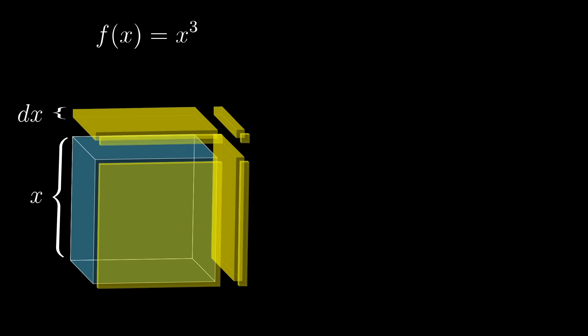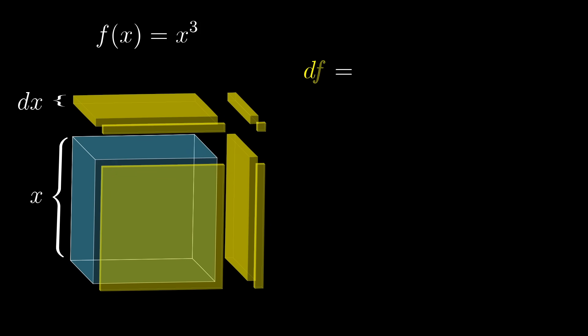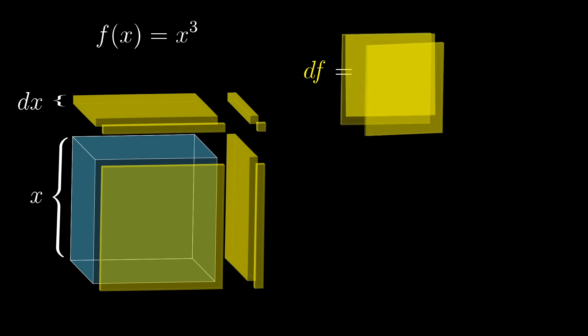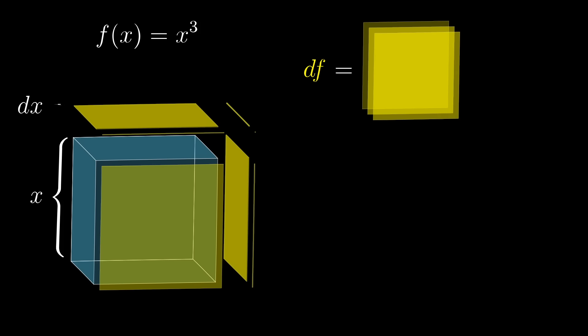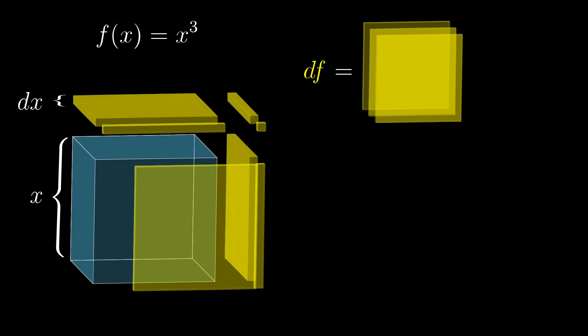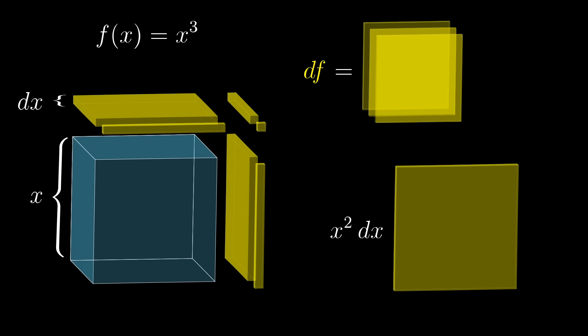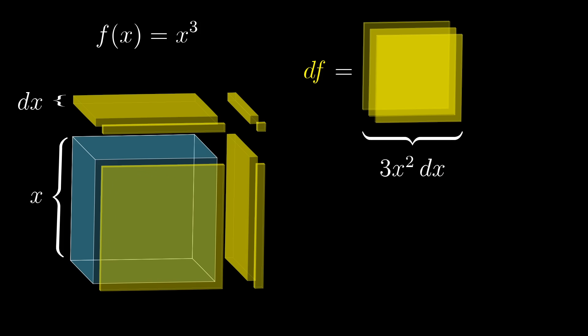It's nice to think of this new volume as broken up into multiple components, but almost all of it comes from these 3 square faces. Or, said a little more precisely, as dx approaches 0, those 3 squares comprise a portion closer and closer to 100% of that new yellow volume. Each of those thin squares has a volume of x squared times dx, the area of the face times that little thickness dx. So in total, this gives us 3x squared dx of volume change. And to be sure, there are other slivers of volume here along the edges and that tiny one in the corner, but all of that volume is going to be proportional to dx squared, or dx cubed, so we can safely ignore them.